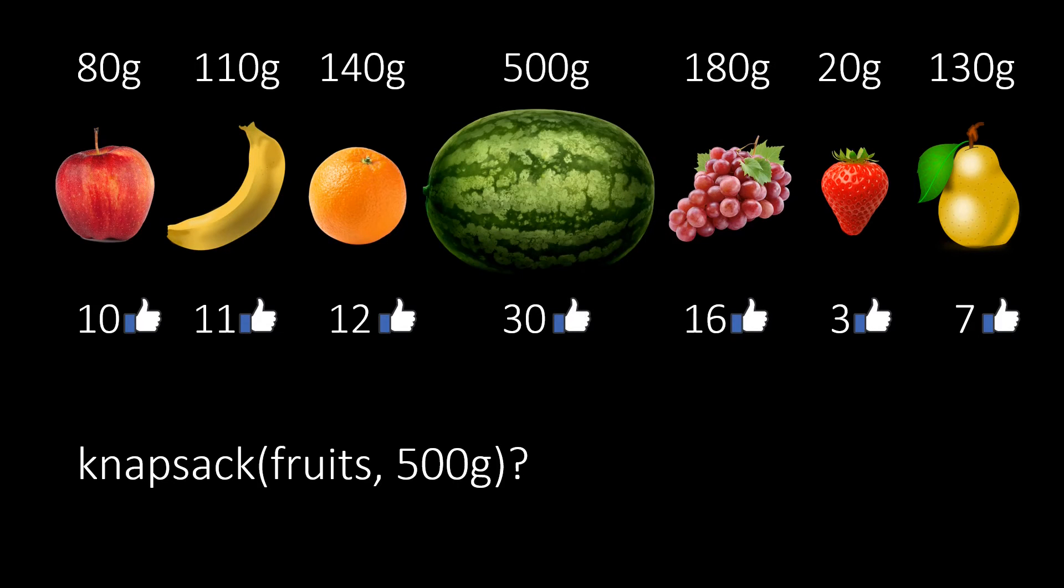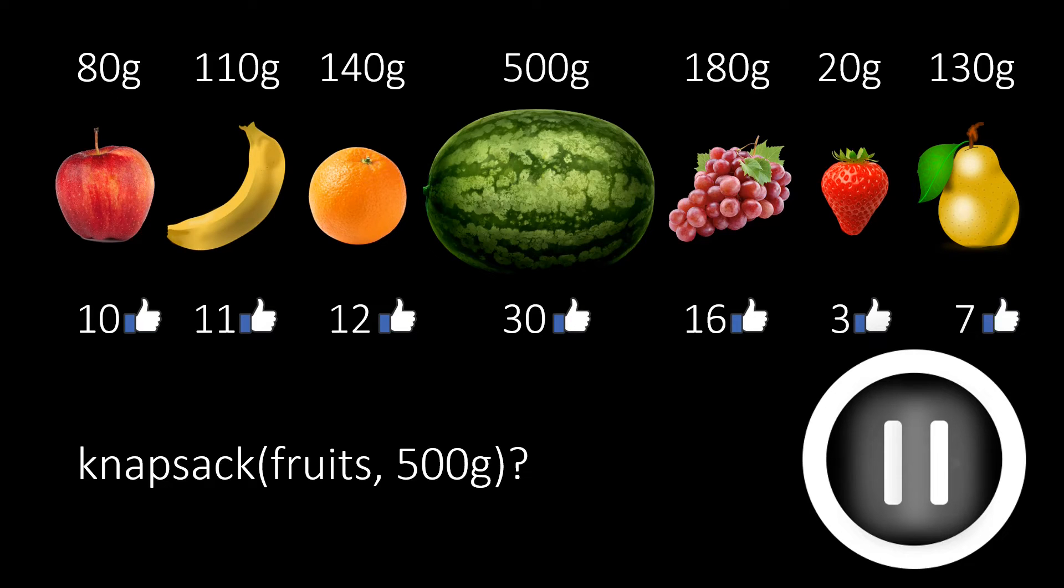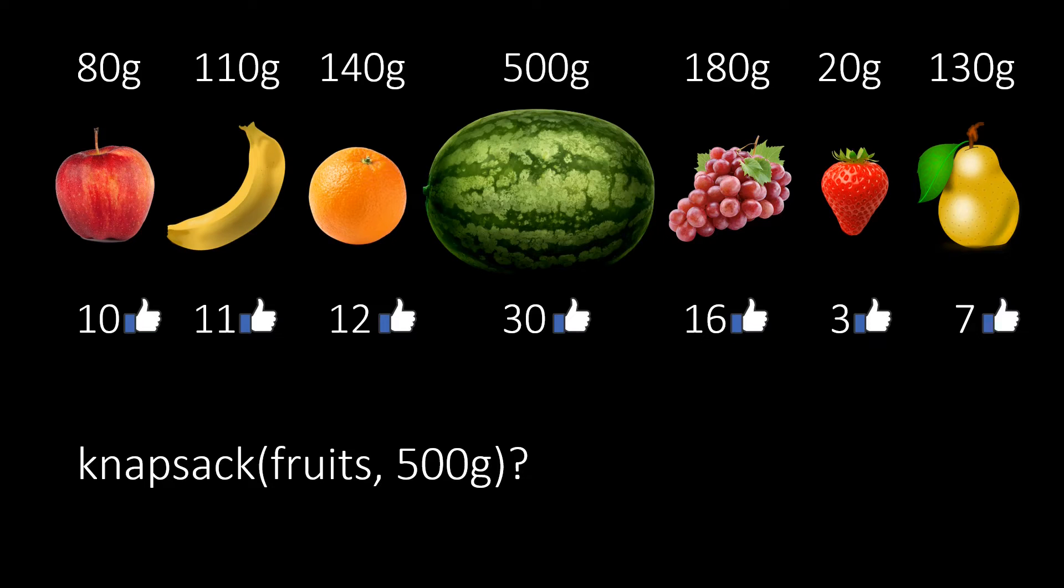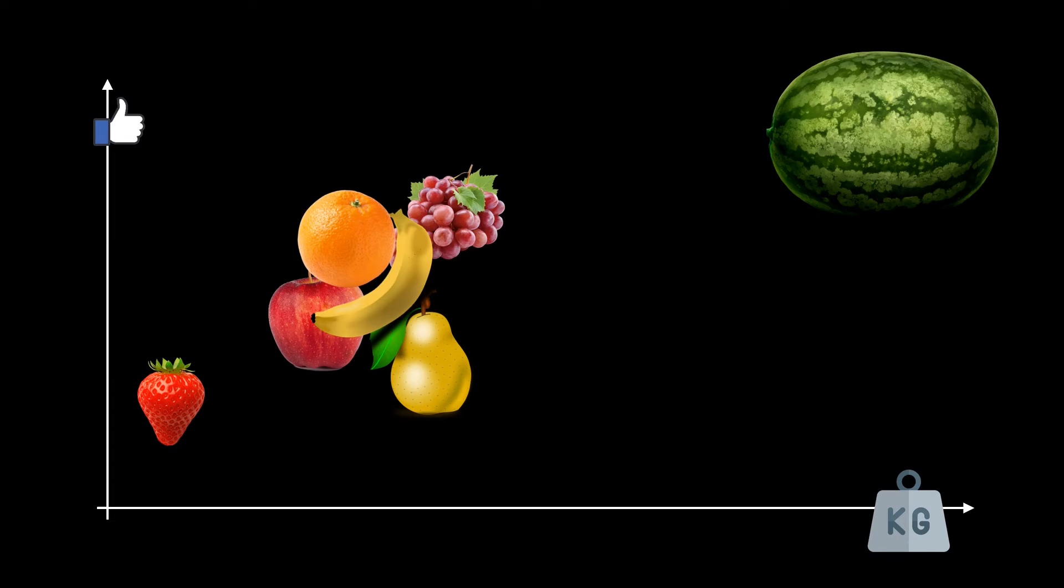If you want to try to improve the value of 43, just pause the video. Let's try to solve the knapsack problem systematically. We might plot all the fruits in two dimensions: weight and value. The melon is the most valuable single fruit but also by far the heaviest. The strawberry is the least valuable but also the lightest. It seems to be a good strategy to take the fruits which have a high value per weight ratio.